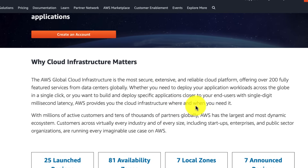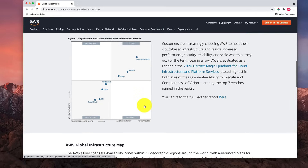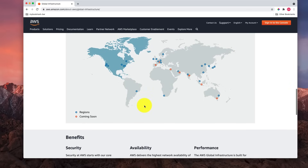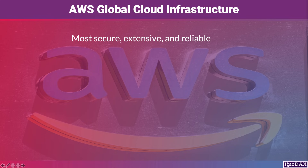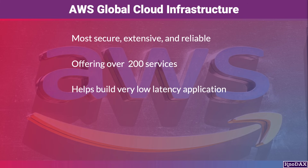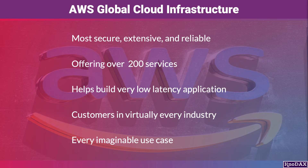AWS provides you with the cloud infrastructure where and when you need it. The AWS Global Cloud Infrastructure is the most secure, extensive, and reliable cloud platform. AWS offers over 200 services as of this recording. It not only allows you to deploy your application across the globe with a single click, but also allows you to build and deploy specific applications closer to your end users with single-digit millisecond latency.